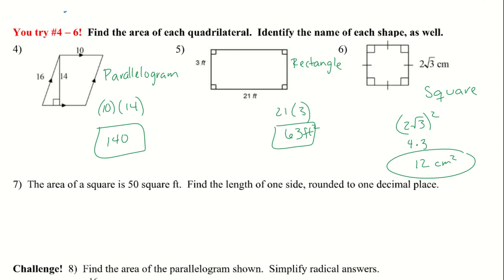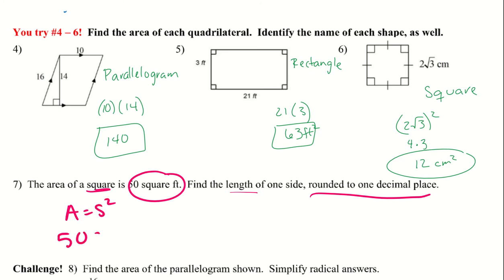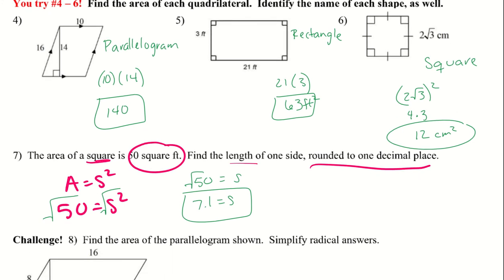For number 7: the area of a square is 50 square feet — find the length of one side rounded to one decimal place. Using area = S², we have 50 = S². Taking the square root of both sides gives S = √50. Plugging that into a calculator, one side length is approximately 7.1.